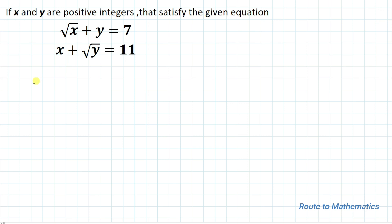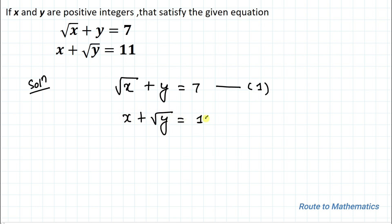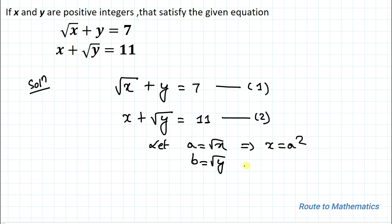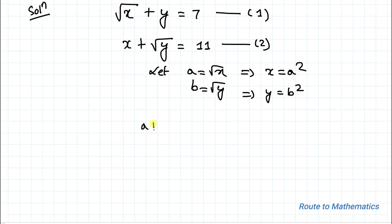Let's start the solution. We have √x + y = 7 — call this equation 1 — and x + √y = 11 — call this equation 2. In the next step, let's assume a = √x and b = √y, so x = a² and y = b². Substituting into equations 1 and 2 gives us: a + b² = 7 (equation 3) and a² + b = 11 (equation 4).